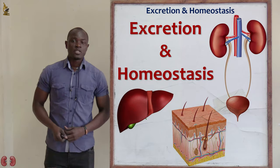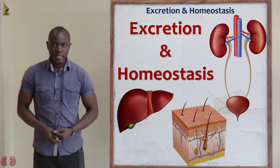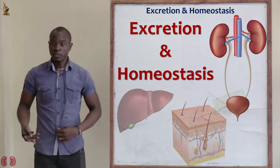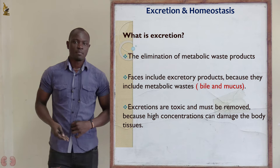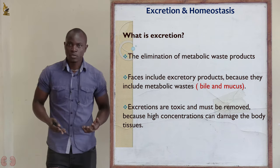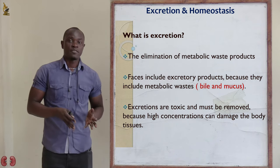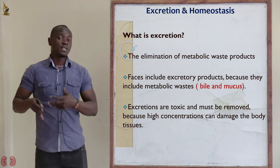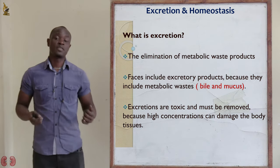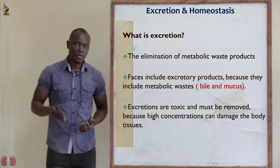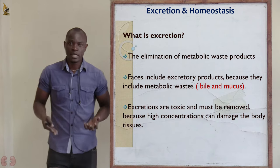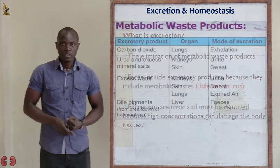Today in this class we're going to study about excretion and homeostasis in living organisms. First, the definition of terms: excretion is the process whereby living organisms separate and eliminate waste products from their bodies. If these waste products are left in the body, they will poison the cells, causing them to die.